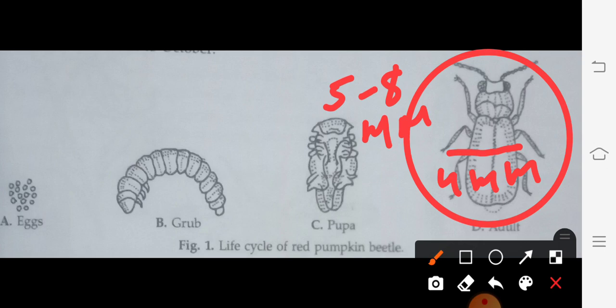The intermediate stage of the beetle is the grub. This is the grub, intermediate stage of the beetle. These beetles have biting and chewing type of mouthparts. Their body is orange red colored.